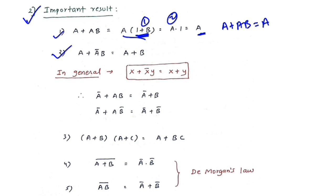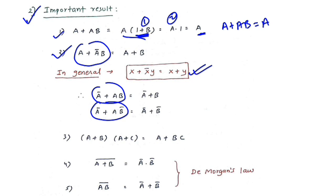Point two: A + ĀB = A + B. In general, X + X̄Y = X + Y. For example, Ā + AB: here X is Ā and X̄ is A, so the answer is Ā + B. Similarly, Ā + AB̄: X is Ā and Y is B̄, so the answer is Ā + B̄.